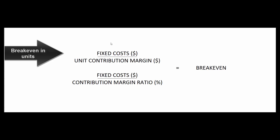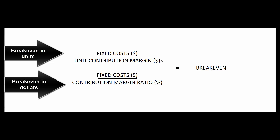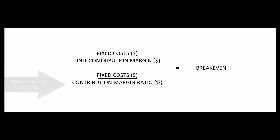Remember the basic formulas: fixed cost divided by unit contribution margin gives us break-even in units, or fixed cost divided by contribution margin ratio gives us break-even in dollars.